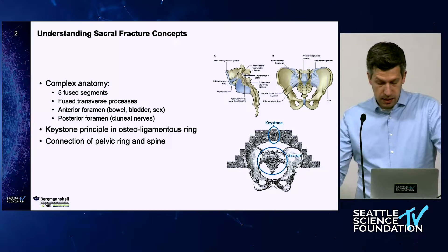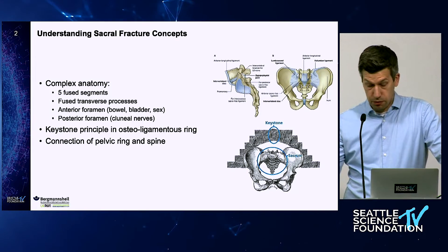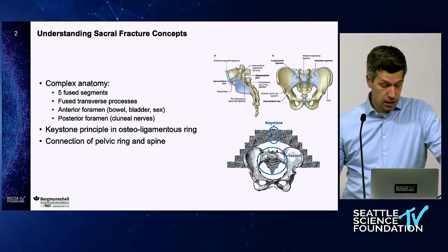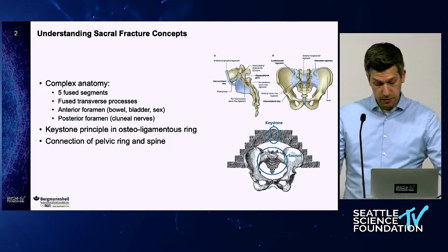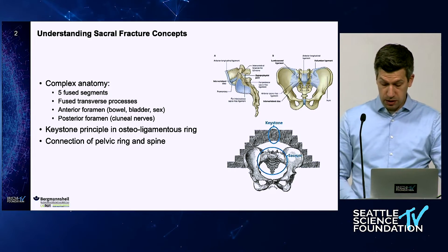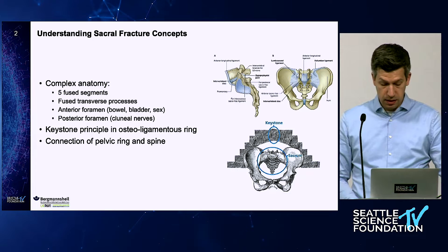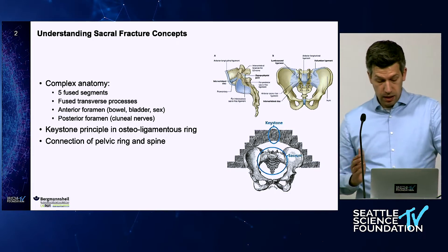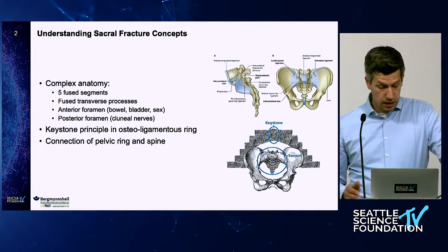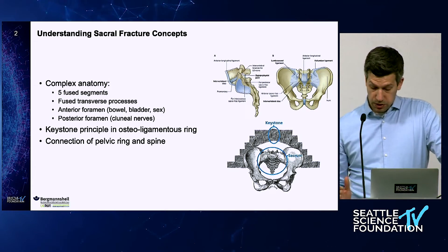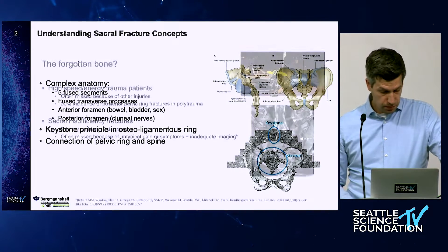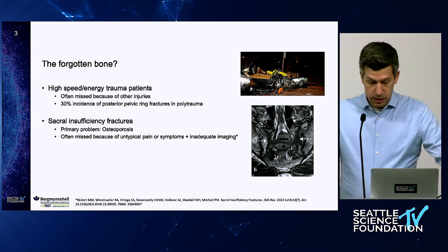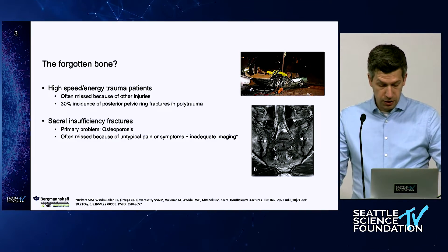Let me give you a short introduction on why the sacrum plays such an important role — for you as spine surgeons, but also for us as orthotrauma surgeons. The sacrum has a relatively complex anatomy with five fused segments, five fused transverse processes, and various ligaments attached, building the osteoligamentous ring as part of the pelvic ring. The bony stability is achieved by a keystone principle — it is kind of the forgotten bone.